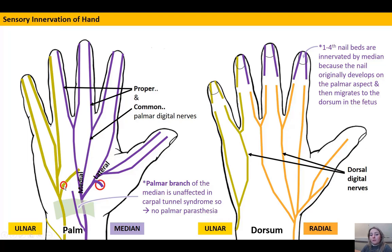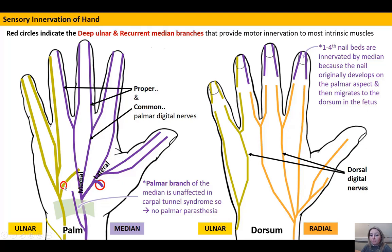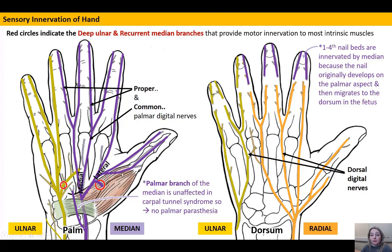Two nerves are highlighted here because they are motor nerves that dive deep to supply the thenar and hypothenar eminences, as well as other muscles. The deep motor branch of the ulnar is called the deep ulnar nerve or deep branch of the ulnar. The corresponding median nerve branch is called the recurrent branch of the median — it runs back in the direction it came from to enter the thenar eminence, diving deep between the abductor and flexor pollicis brevis.